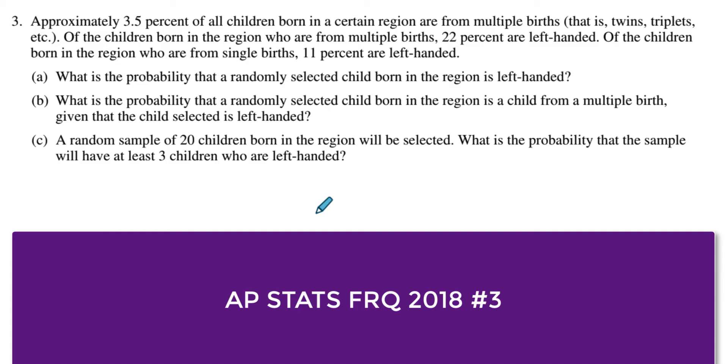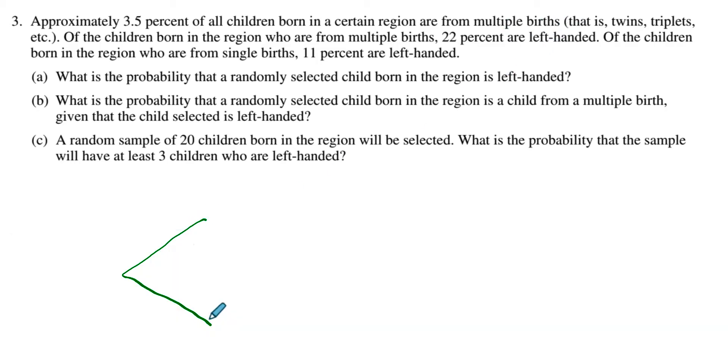The way that I always approach all of these multiple event probability type questions is I draw a tree diagram. So the first question you ask yourself starts out, 3.5% of children born are from multiple births, twins and triplets, etc. What can happen for the children here? Well, you can either be born from multiple births, so I'll just put multiple births, or let's just call it not multiple births. So this is 3.5%, so I'm going to write that as a decimal, 0.035. That is the probability that that happens.